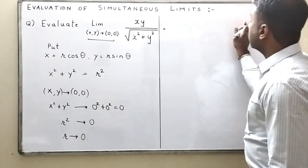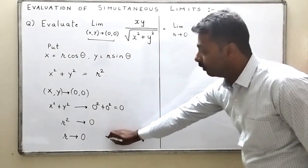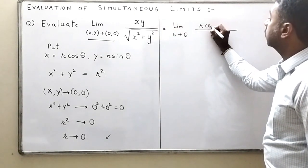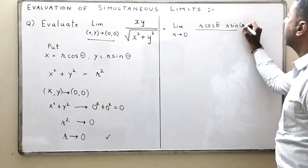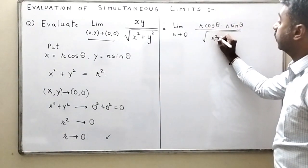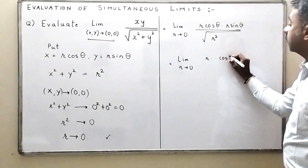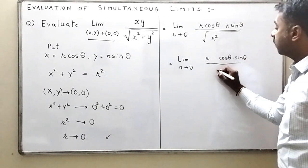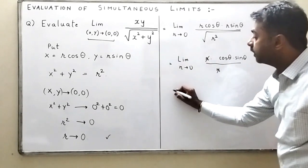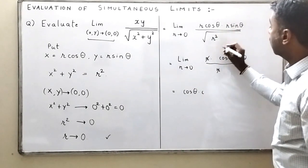So this limit becomes: limit as r → 0 of (r cosθ · r sinθ) divided by the square root of x² + y², but x² + y² = r², so this is square root of r². Therefore this becomes limit r → 0 of r cosθ sinθ upon r, and one r cancels, leaving cosθ sinθ outside the limit.